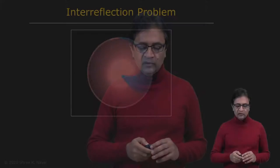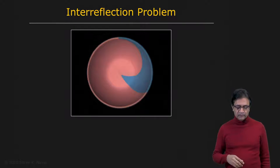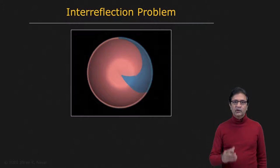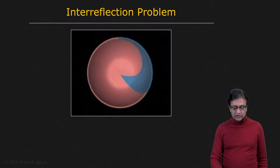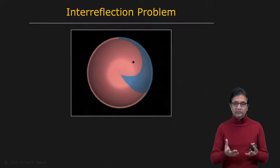I want to leave you with one last topic that we have set aside, which is very important, and that is the inter-reflection problem. Let's take a look at this simple object right here. It's being illuminated by a single point light source. If you consider one point on the object — and I should mention up front that this object is a concave object, it's a cup.